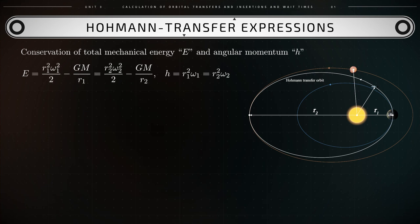In expression 1, the conservation of total mechanical energy, GM is the gravity parameter of the Sun. That equals 132,712,440,042 kilometers cubed per second squared.